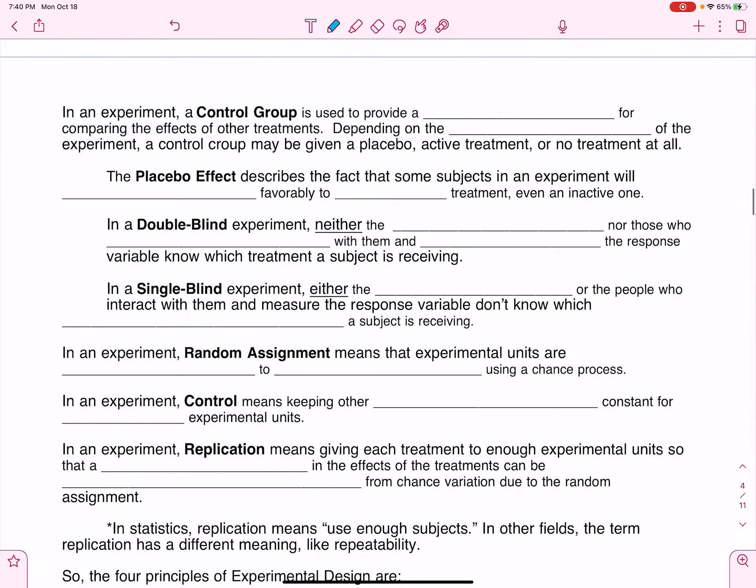In an experiment, we need to talk about a control group. What is a control group? Well, this just provides a baseline for comparing the effects of our treatment. In other words, if I work at a drug company and I've created a new headache medicine, and I think it's better than the one I already have, then my control group is going to be the people who are receiving either the old treatment.